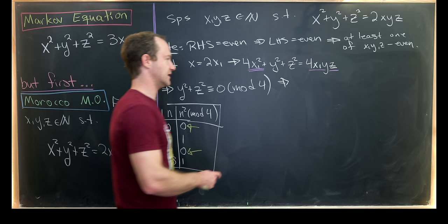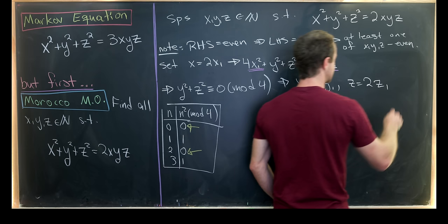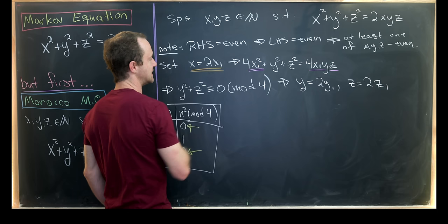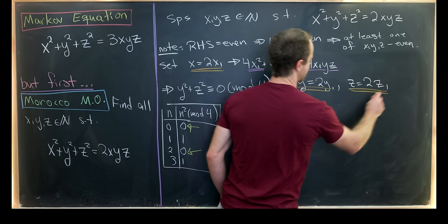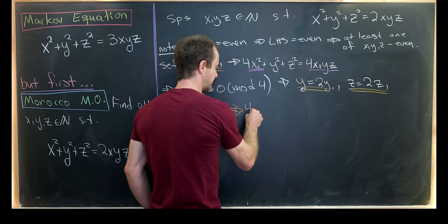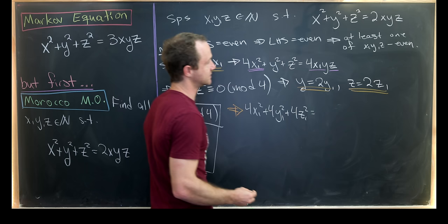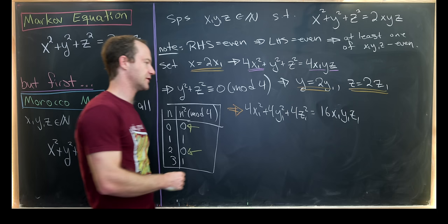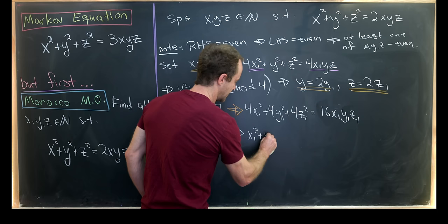So to summarize all of that, we know that y and z are also even. So we might as well write y as two times y₁, and we'll write z as two times z₁. Now we'll take all of this and plug it into our original equation. So by all of this, I mean this even expression for x, this even expression for y, and this even expression for z. So into our original equation, we'll give us 4x₁² + 4y₁² + 4z₁² = 16x₁y₁z₁, when all of the multiplication has been taken care of.